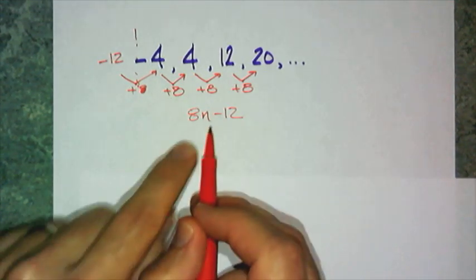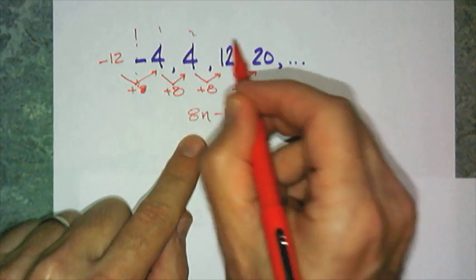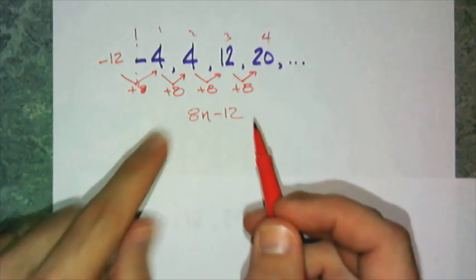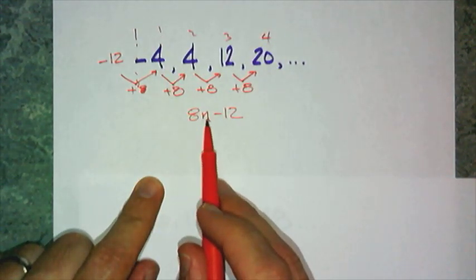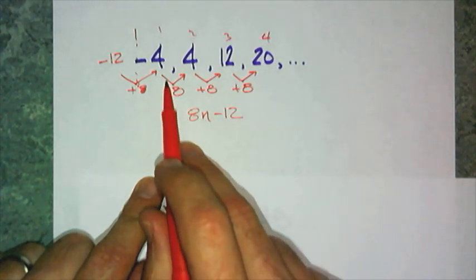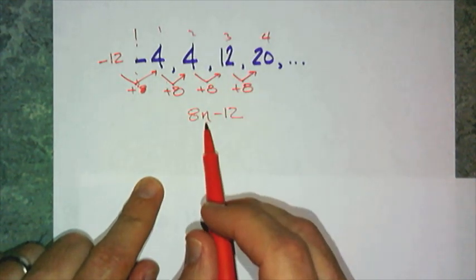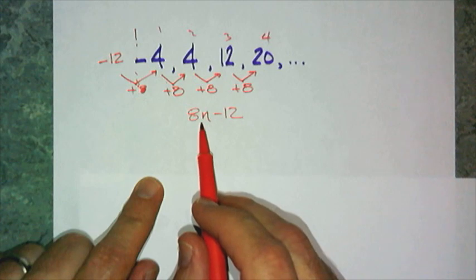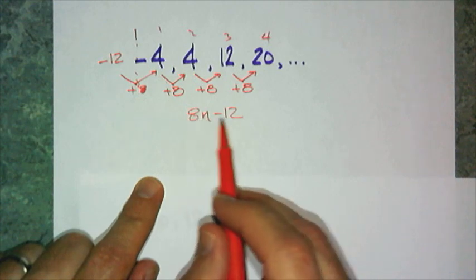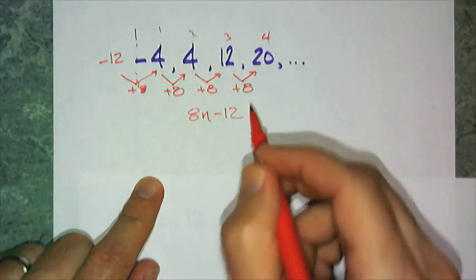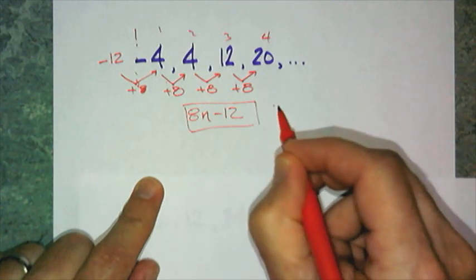Let's see. And I would like to check. That's my first term, second term, third term, fourth term. If I plug in the first term, that would be 8 times 1 minus 12, which is negative 4, and 2 would be 8 times 2 is 16, minus 12 is 4. Yay.